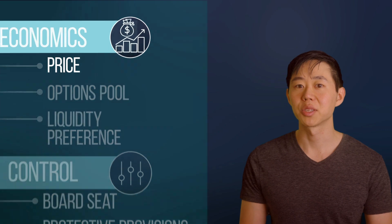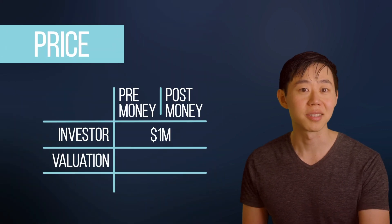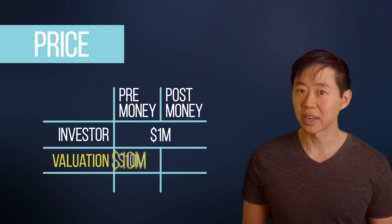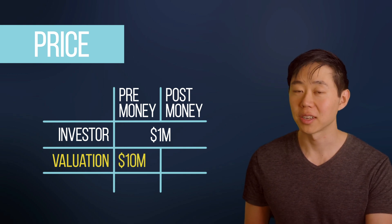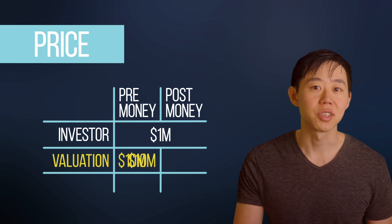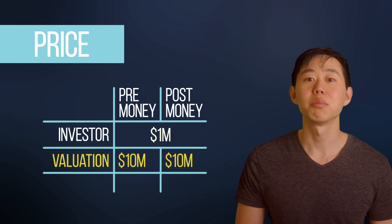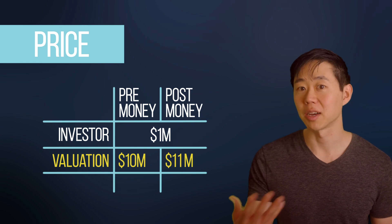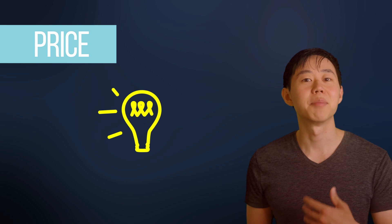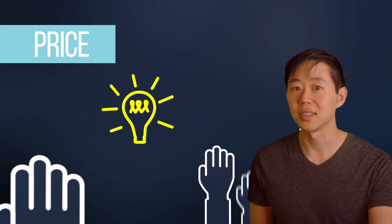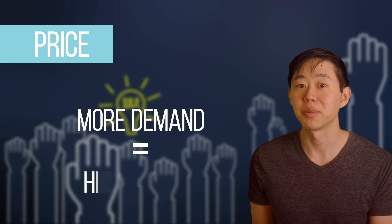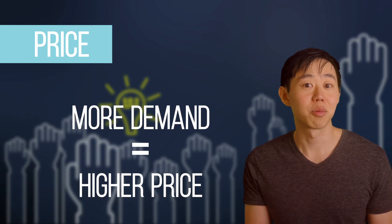The most visible economics-related term for founders is the price, which is measured by pre- and post-money valuation of the business. The pre-money valuation is what investors value the company at today before the investment, and the post-money valuation is just the pre-money valuation plus the amount of cash investment. The best way to negotiate price is to get competitive auction dynamics from multiple VCs who want to invest in your company — basic economics 101. If you have more demand for your company's shares than supply, you're going to get a higher price.